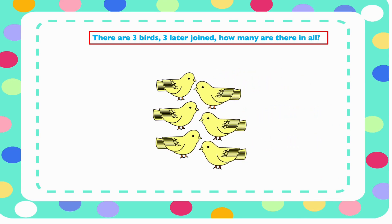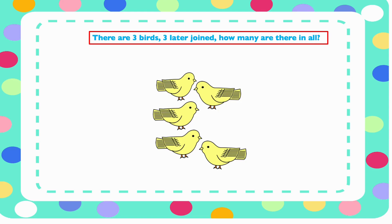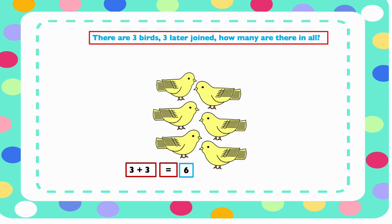To find out we need to count them together. So let's do that: one, two, three, four, five, six. We have six beds, so three plus three will give us six.